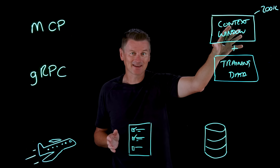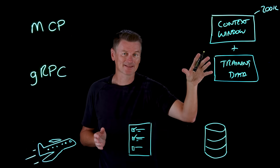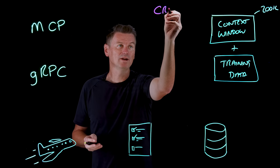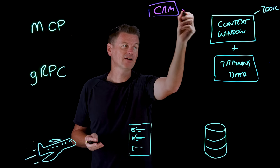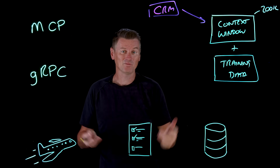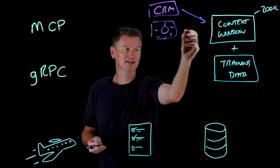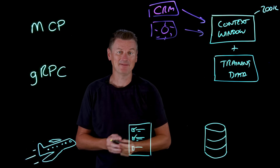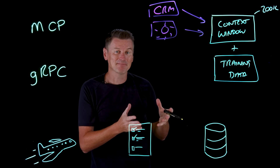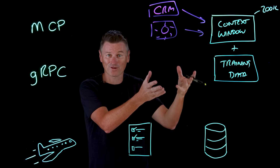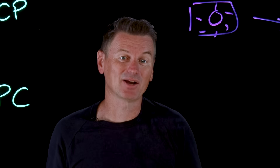Instead of cramming everything into context, we give LLMs the ability to query external systems on demand. If you need some customer data, you could query a CRM tool and add that into the context window. Or maybe you need the latest weather data — you could call a weather API. The agentic LLM becomes an orchestrator, intelligently deciding what information it needs and when to fetch it.